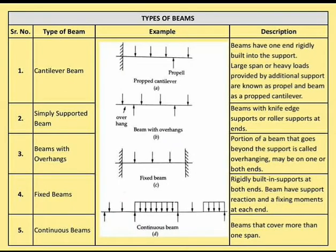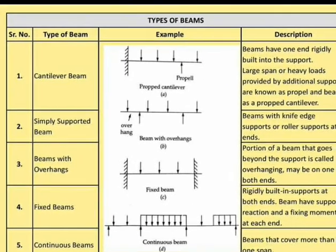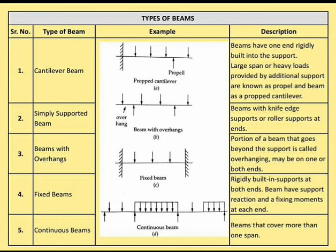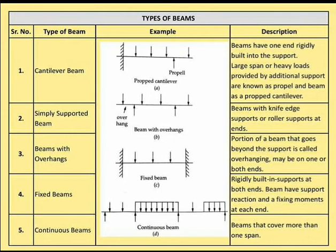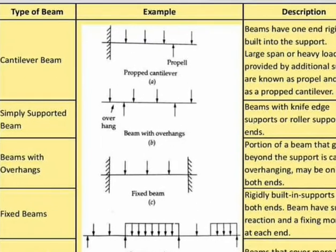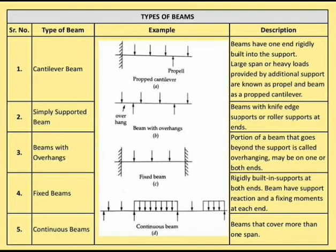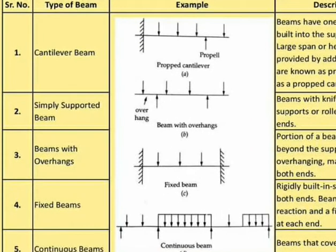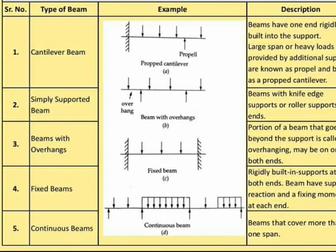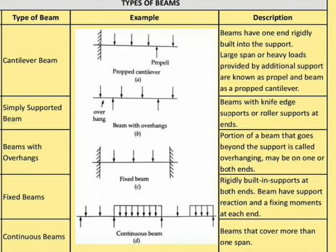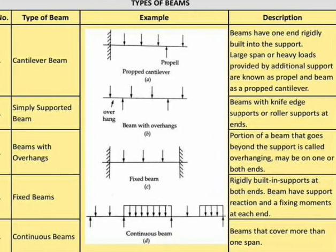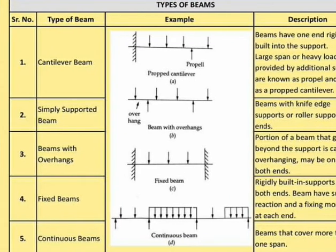Now we are going to see the various types of beams. First is the cantilever beam — it has only one fixed support. For large span or heavy loads, additional supports are provided, known as a propped cantilever. Next is the simply supported beam, which has knife edge or roller supports at the ends. A beam with overhangs has a portion that goes beyond the supports, which may be on one or both ends.